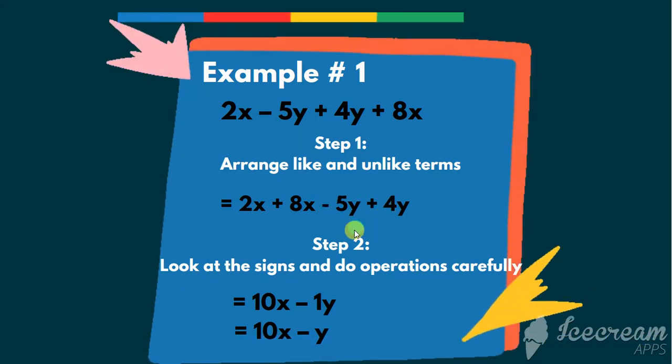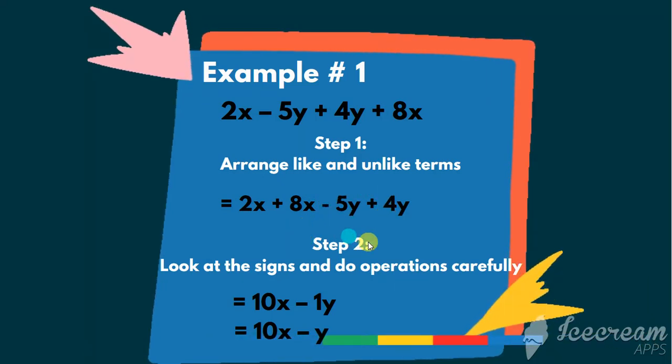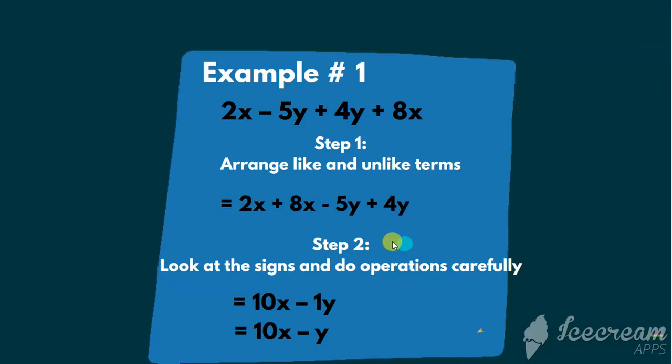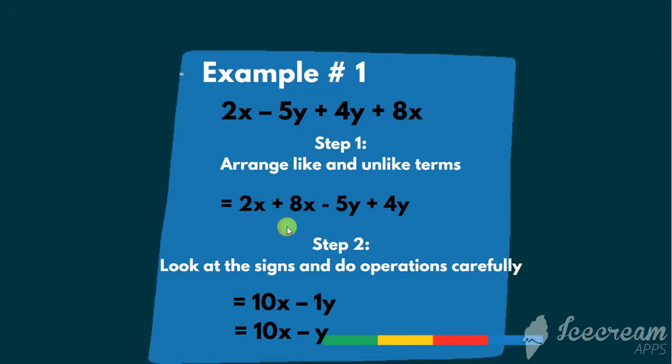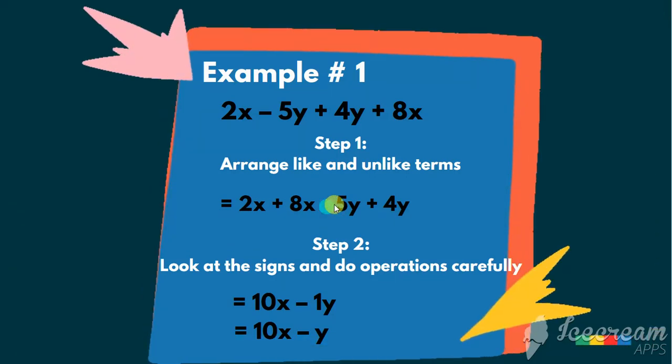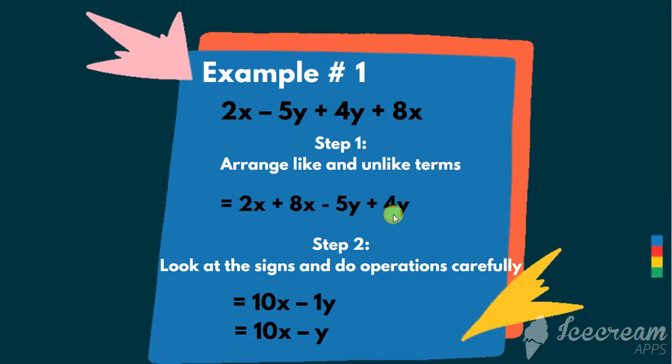Step 2 is, look at the signs and do operations carefully. So this is very easy. 2 plus 8 is 10. And here, there are different signs. So remember my point.